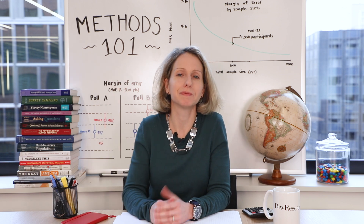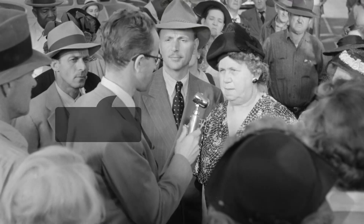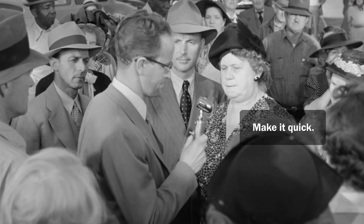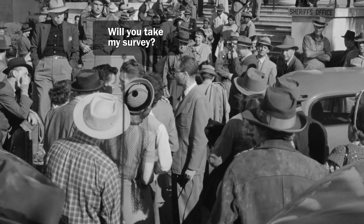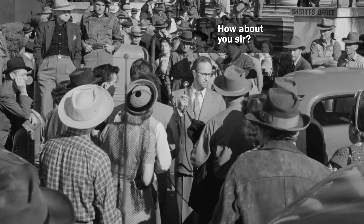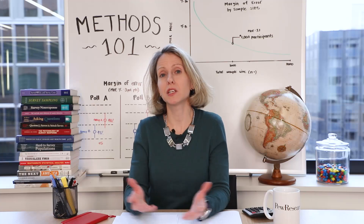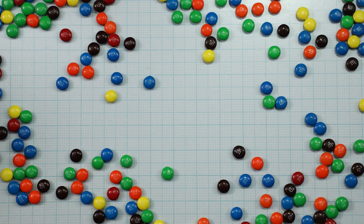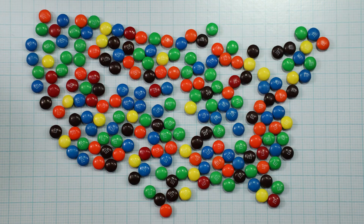Of course, if you want to measure what the entire nation thinks, you can't just stand on a street corner and wave people over. That type of haphazard sample would only represent the people near that street corner at that particular time, and you wouldn't get the people that didn't necessarily want to talk with you. A nationally representative survey requires a random sample in which each person in the United States had a chance of selection.